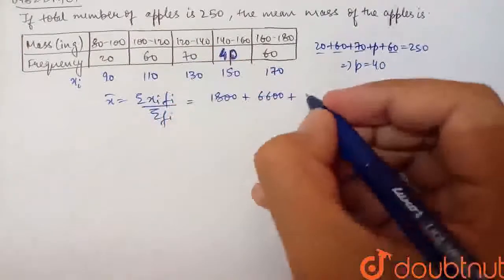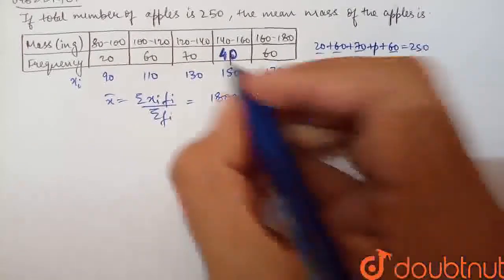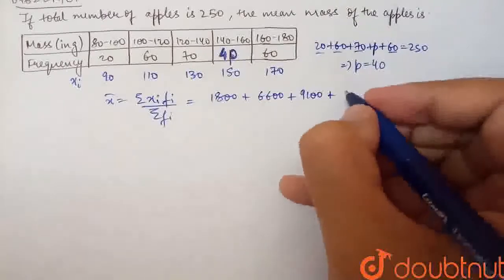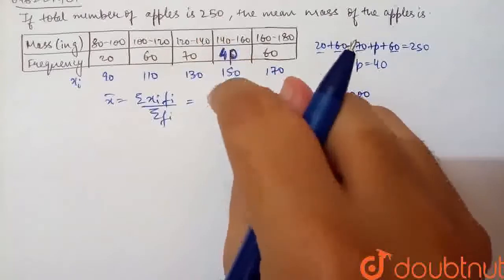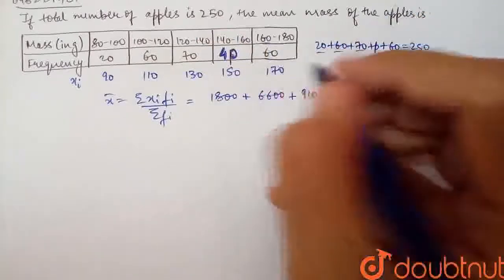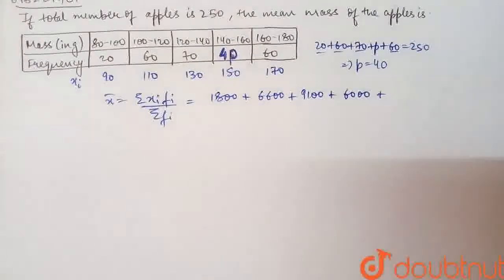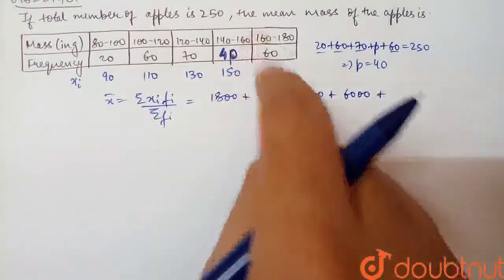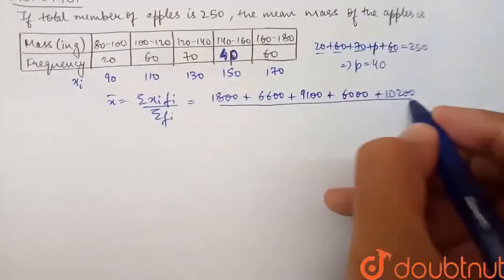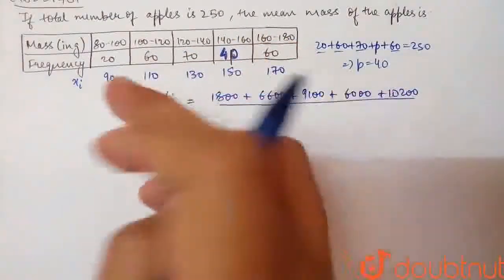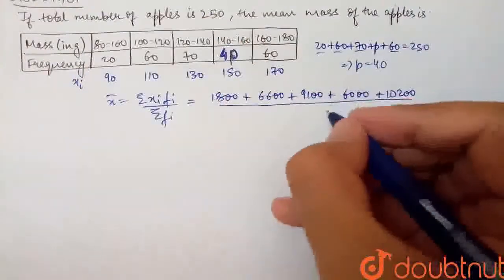which is 9100, plus 4 into 15 which is 6000, plus 6 into 17 which is 10200.